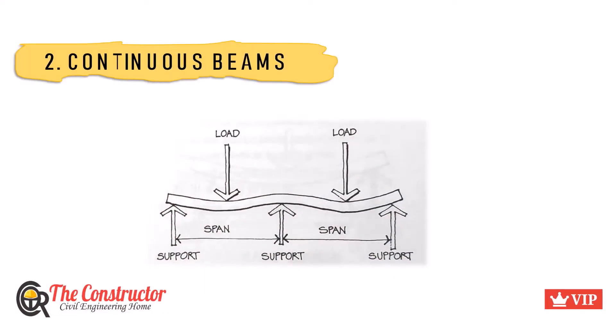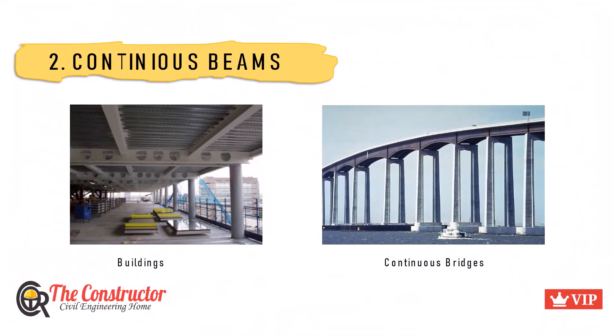Continuous beams are beams that have more than two points of support along their length. These supports lie in the same horizontal plane, and the spans between the supports are in one straight line. The figure shows the deflection pattern of a continuous beam placed between supports during the action of load. Continuous beams are commonly used in buildings where a long beam is supported intermediately by columns, or in continuous bridges.